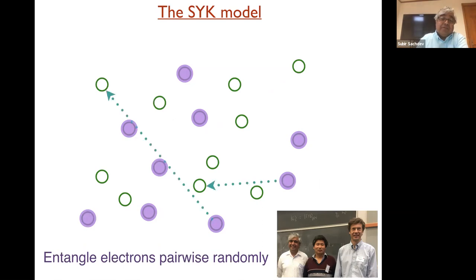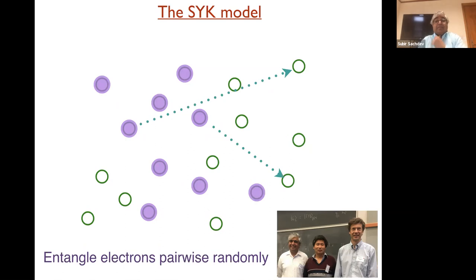Any one of these processes is a term in the Hamiltonian. And the amplitude for any of this process is a random number. So that's basically the model where you disallow single particle hopping. If you had single particle hopping, you just essentially get what's called the random matrix model, which describes certain quantum dots quite well. But now you're imagining a regime where for some reason this single particle hopping is weak, but you have lots of random interactions between electrons.